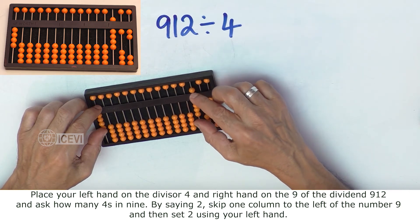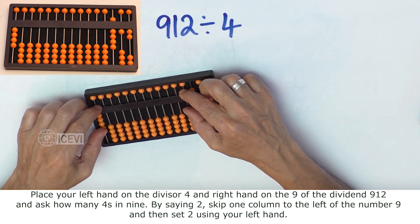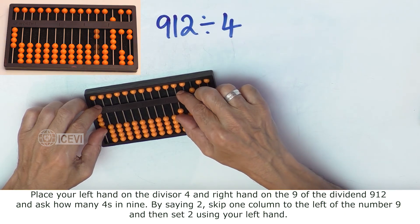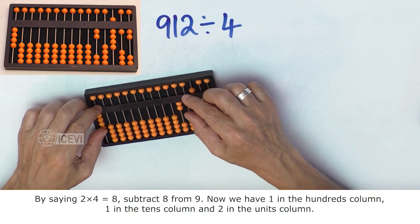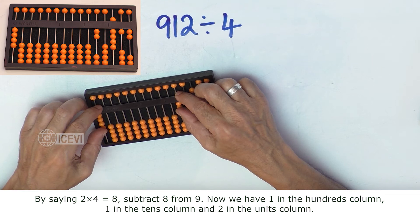Ask: How many 4's in 9? By saying 2, skip one column to the left of the number 9 and set 2. By saying 2 multiplied by 4 equals 8, subtract 8 from 9.